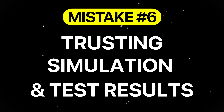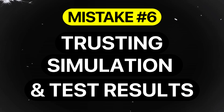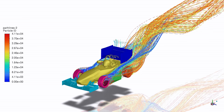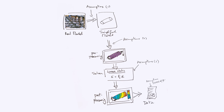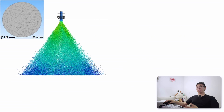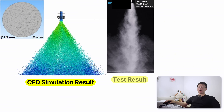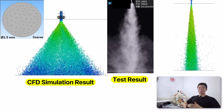Mistake number six is trusting simulation or test results without sanity checking or sufficient data. Simulation outputs are only as good as their assumptions, mesh, and boundary conditions. For example, say we ran CFD simulations on a spray nozzle with a coarse mesh and oversimplified inlet flow. However, in testing the nozzle produced a narrow, uneven jet. We then refined the mesh and modeled inlet turbulence, which revealed flow separation at the exit and explained the poor spray pattern, guiding the redesign.